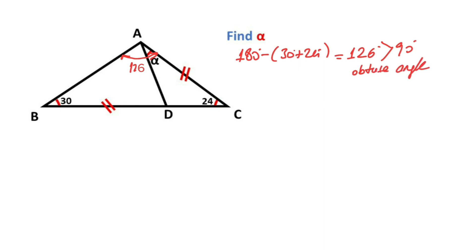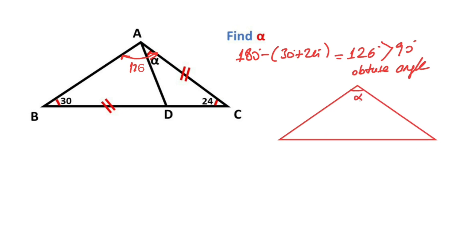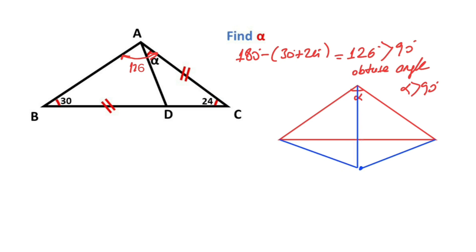Let me remind you: if you have an obtuse triangle, and alpha is larger than 90 degrees — so alpha is an obtuse angle — that means if you draw the circumcircle of this triangle, the center of the circumcircle must be outside of this triangle. If we connect this center point with the corners of this triangle, these three blue lines must be equal, because they are radii of the circumcircle.